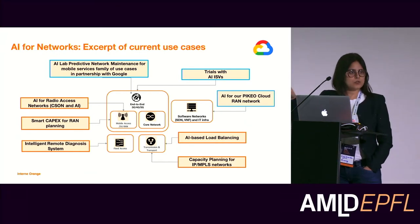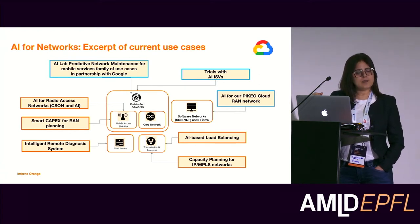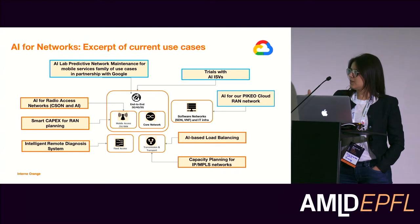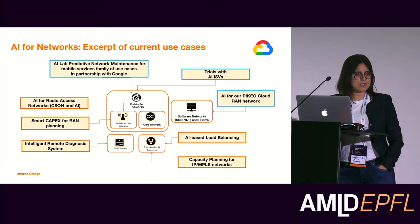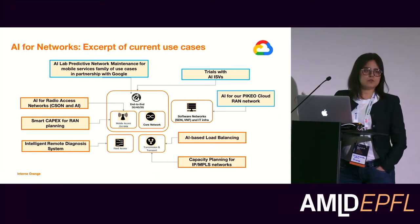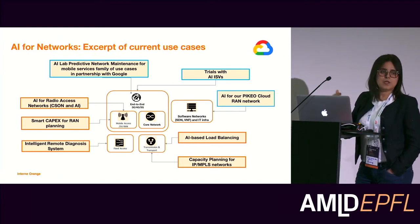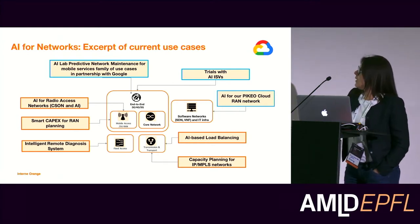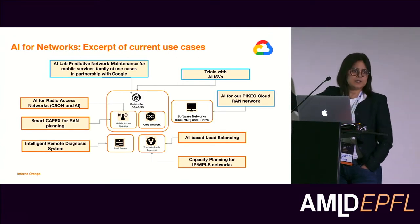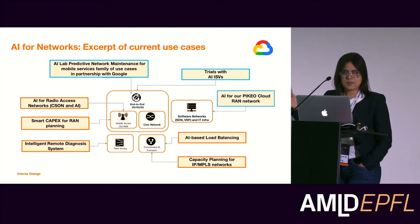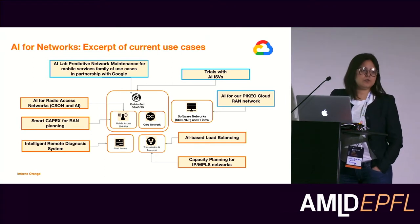We also have topics at the FTTH part for the fixed network, where our goal is to reduce technician interventions by having accurate diagnosis. Instead of wasting time on missions without accurate diagnosis, we use machine learning to learn from past incidents to have the diagnosis ready and decide how to do the intervention. The transport part is more about AI-based load balancing and capacity planning to identify the right routes. I will now zoom into the predictive network maintenance aspect — what we mean by that and the challenges we face.